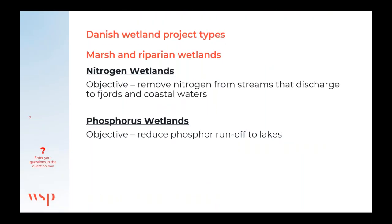In Denmark, there are four different wetland restoration types based on the ecological goal they're trying to improve. The first types are marsh and riparian wetlands — so-called nitrogen wetlands — primarily designed to remove nitrogen from streams that discharge into fjords and coastal waters. This is accomplished by bringing drainage water to the surface and having it flow through the wetland, establishing shallow lakes, raising and re-meandering streams, and restoring the riparian areas to create pre-article flooding.